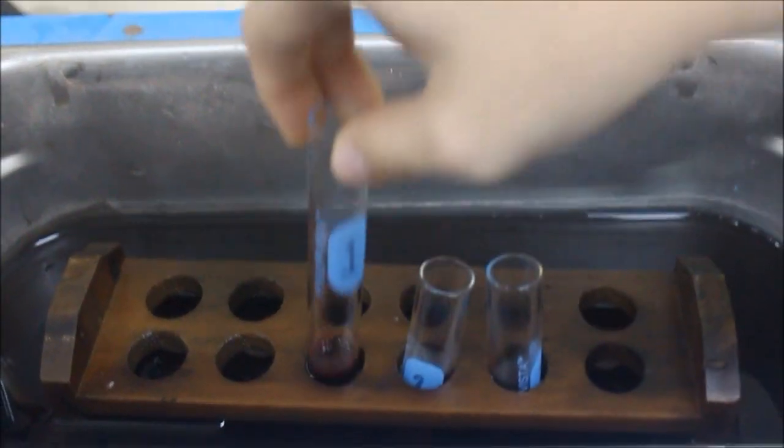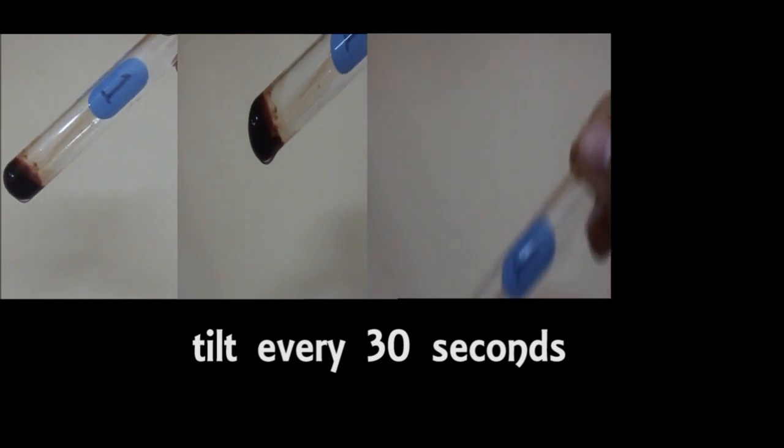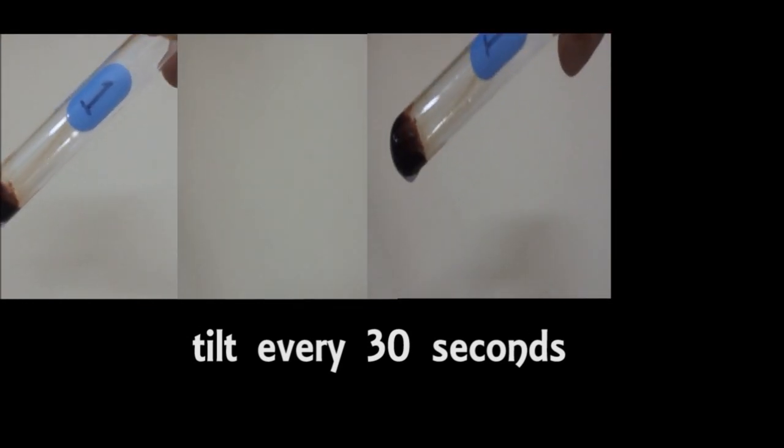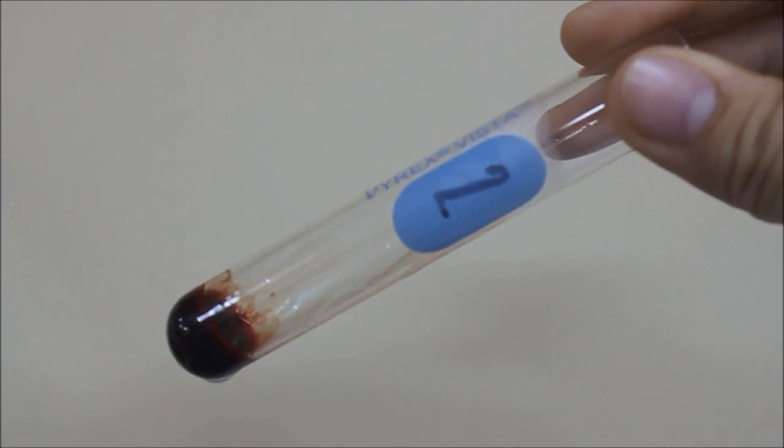At exactly 5 minutes, tilt test tube number 1 gently to a 45-degree angle. Repeat the procedure every 30 seconds until the test tube can be completely inverted without spilling the contents. Do the same in test tube number 2, then test tube number 3.